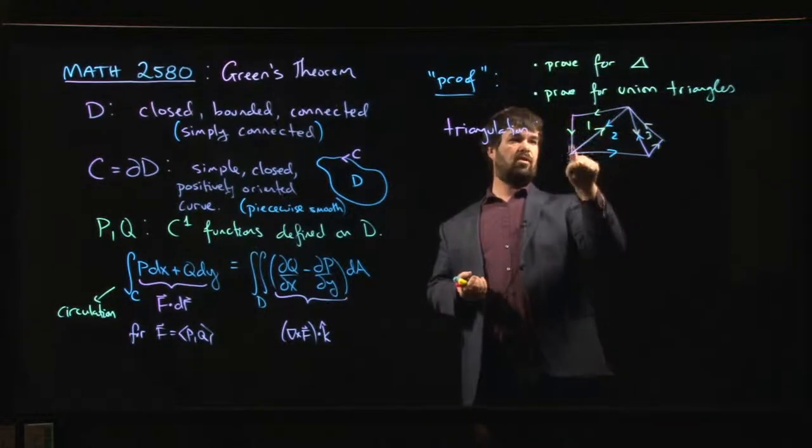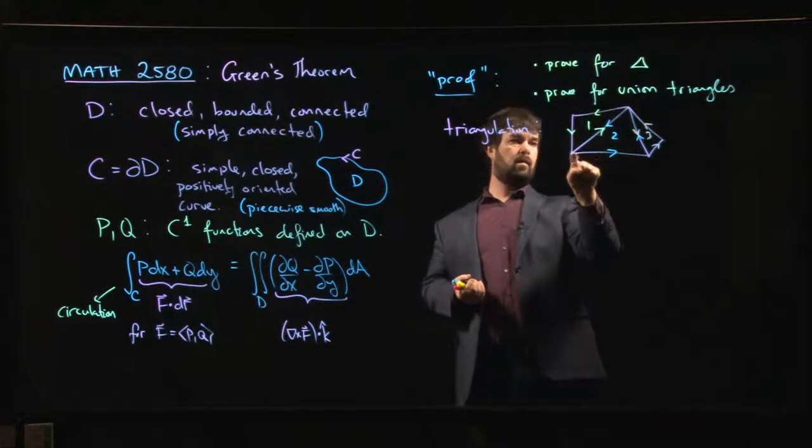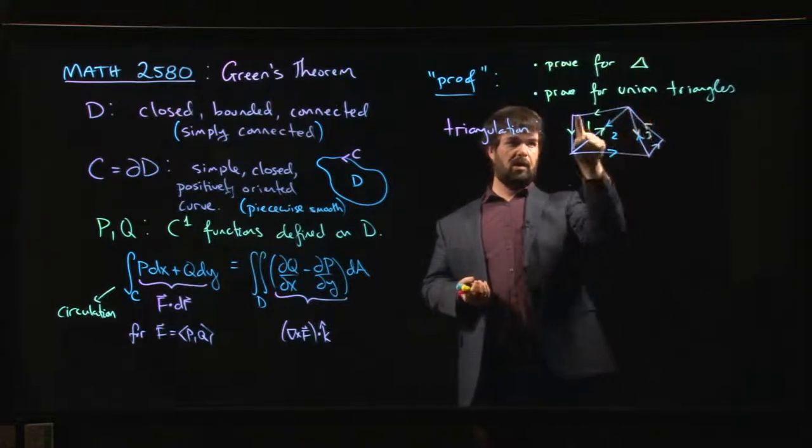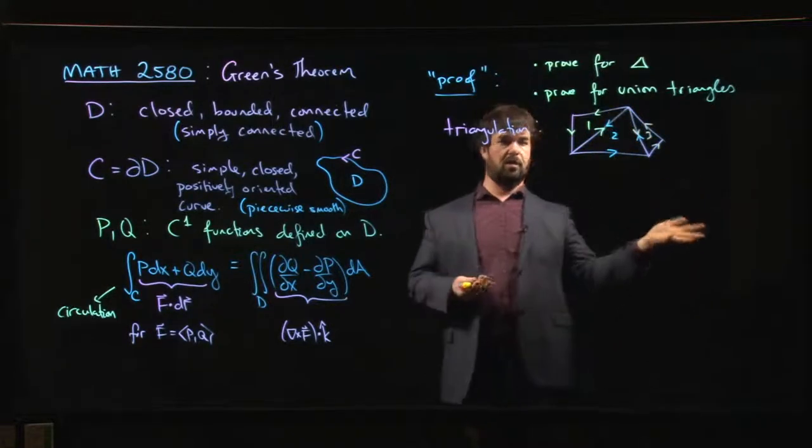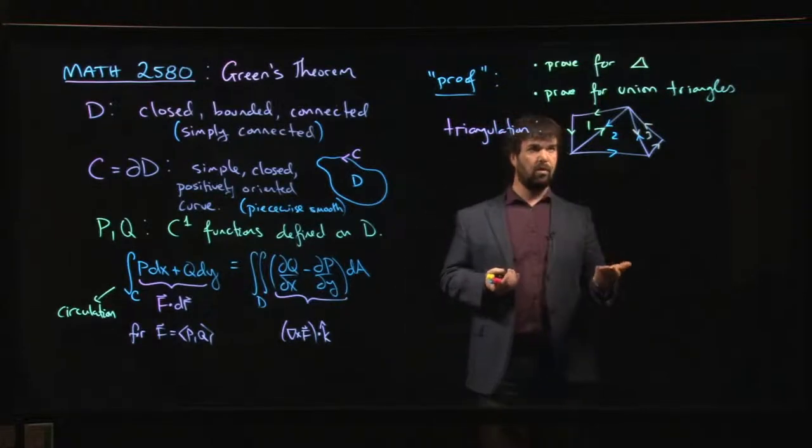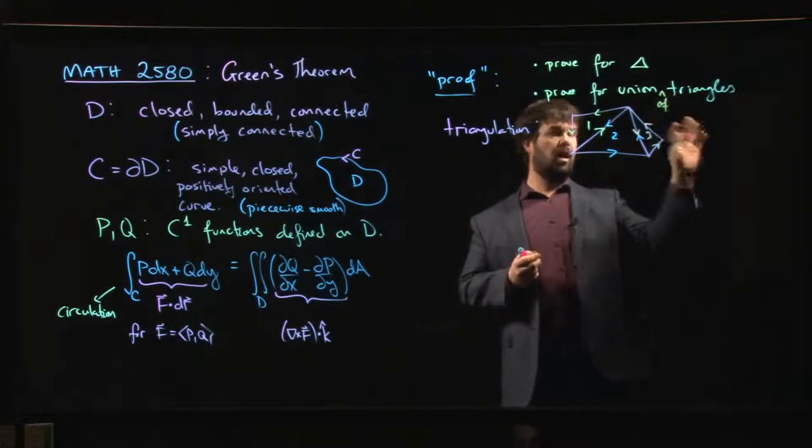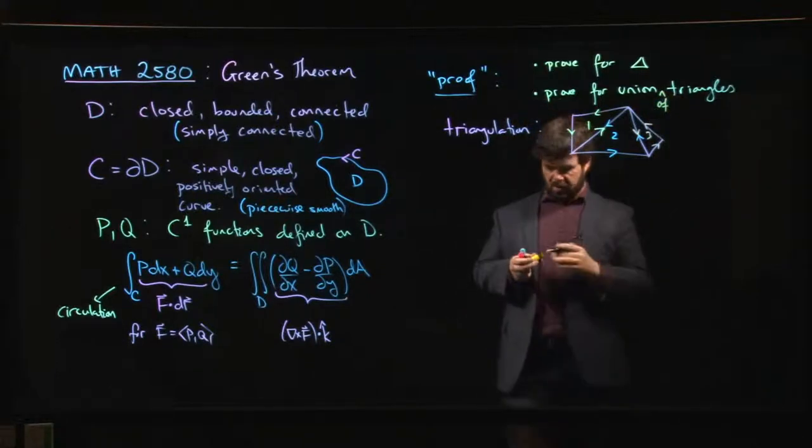And then you'll notice that if you take just the outer boundaries, you get the positively oriented boundary of the original region, right? So you can, union of triangles, you can kind of work out generally that this makes sense, right?